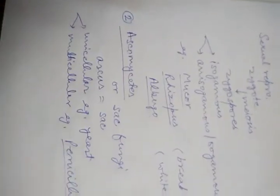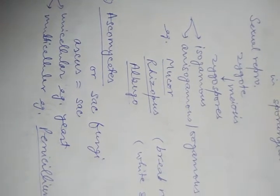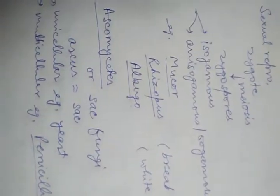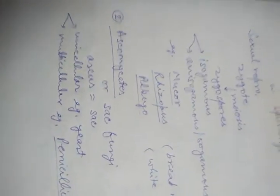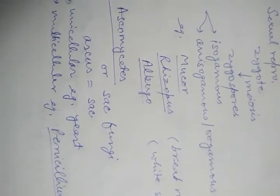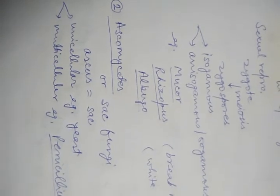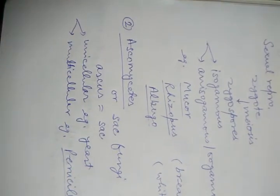Now let us come to the second class: Ascomycetes. Ascomycetes are also called sac fungi — 'ascus' means sac. Because of the presence of a unique bag-like structure called ascus, formed during spore production, they are called sac fungi. Multiple such structures form asci — plural of ascus. Ascomycetes members can be unicellular or multicellular.